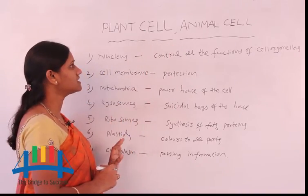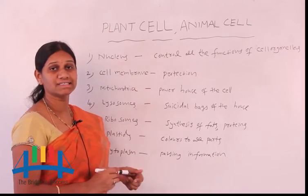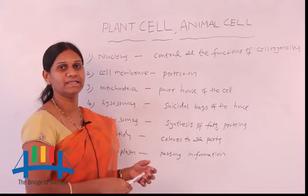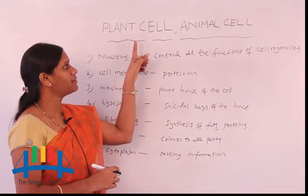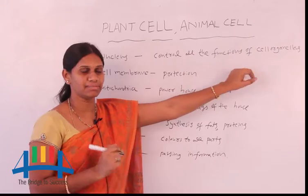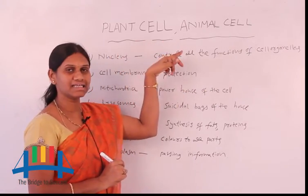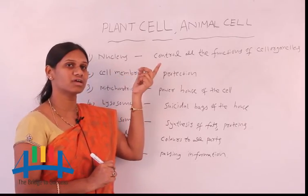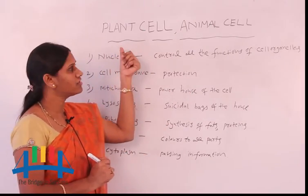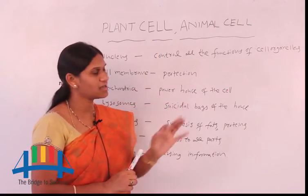When we look at the internal structure of the cell, these are all called cell organelles. Commonly, we observe so many cell organelles in plant cell and animal cell. Cell organelles are the structural and functional units of the cell. The cell is the structural functional unit of an organism, and cell organelles are the basic units of the plant or animal cell.